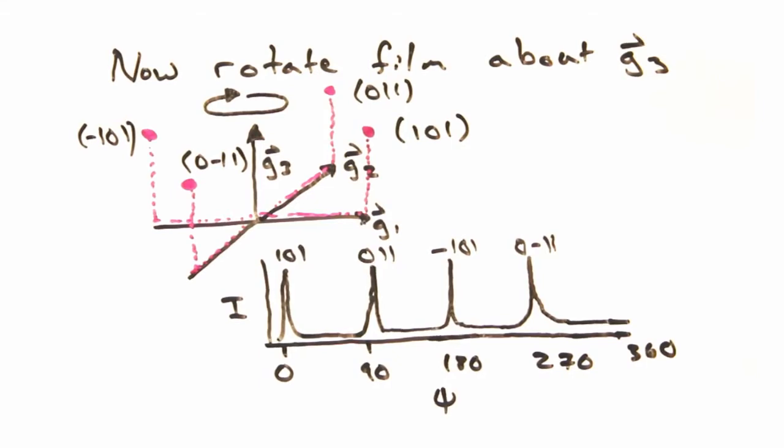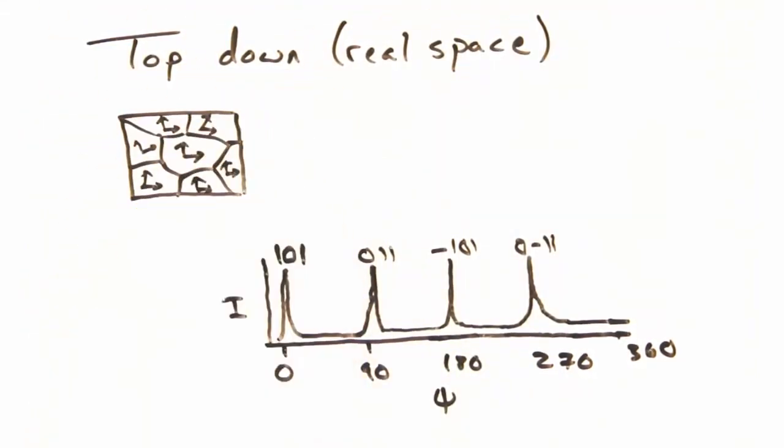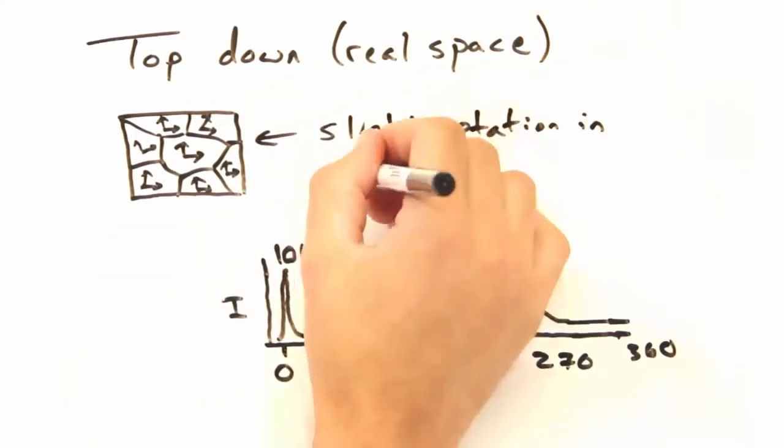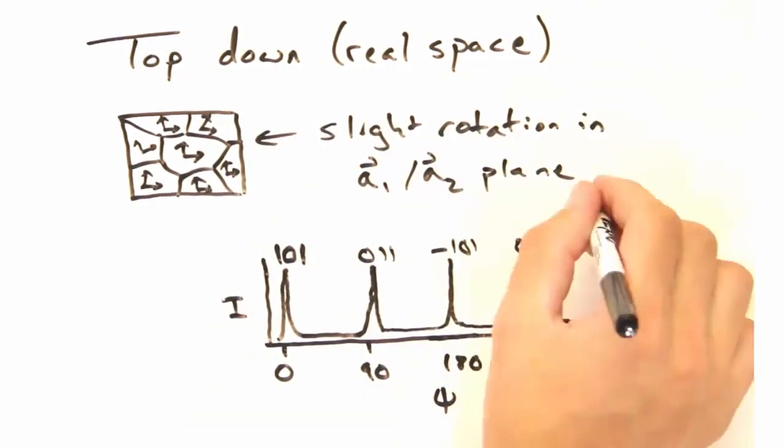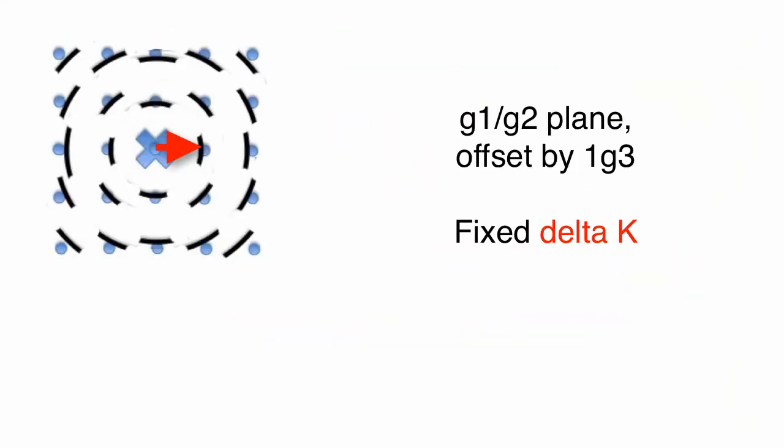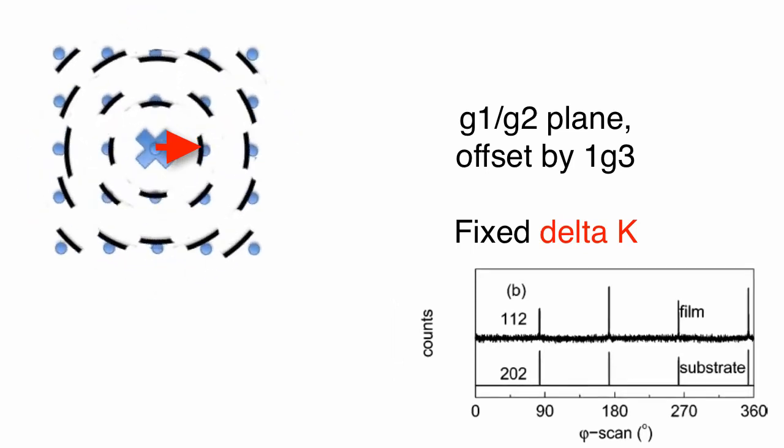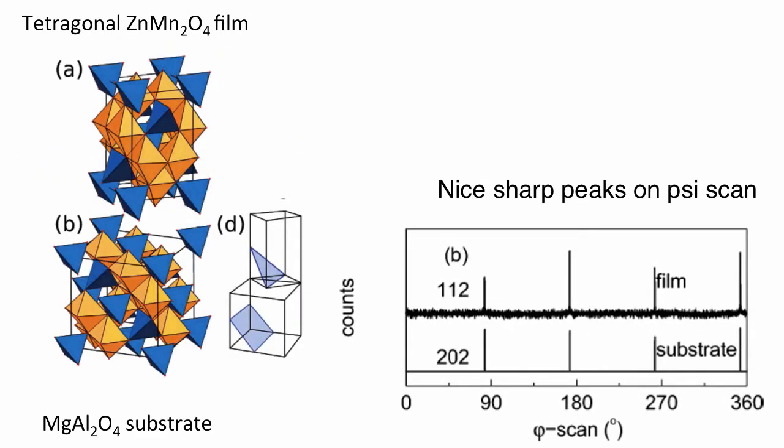Indeed. So to bring this back to thin films, imagine looking down on the sample so that the g-3 vector is into the board. Crystals that have different in-plane orientations will result in arcs in reciprocal space. Similar to the ones we saw for the omega rocking curve? Yeah. So when we see this peak smearing in a phi scan, this gives us a quantitative measure of the in-plane alignment of our film, much like the omega rocking curve for out-of-plane alignment.